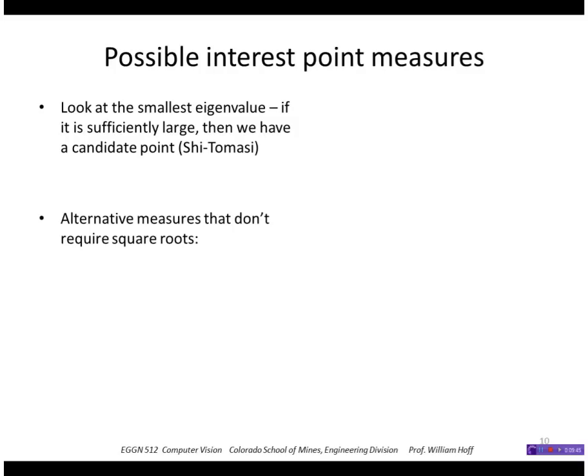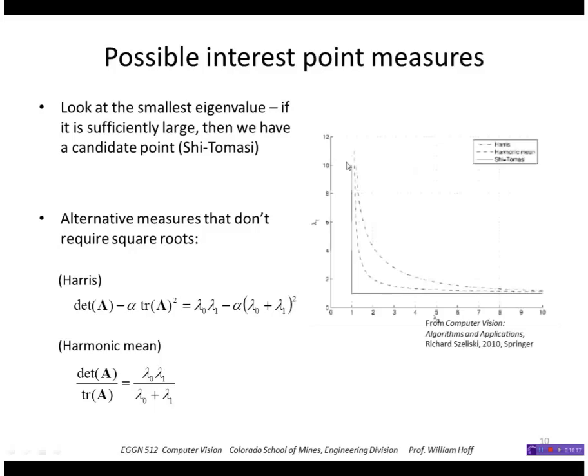Another way to compute this interest point measure that doesn't require square roots is to take the determinant. We don't need to compute square roots for that. Determinant of a 2 by 2 matrix is easy to compute. Also, the trace. So that becomes the product of the two eigenvalues minus the square of their sum. Or I could take the determinant divided by the trace, which is the product divided by the sum. So those three measures are shown in this graph here, where I'm plotting lambda 1 and lambda 2, and this is the contour of equal values of the measure, whichever one it is. Basically, they all have similar behavior. They give you the value of the lowest eigenvalue.